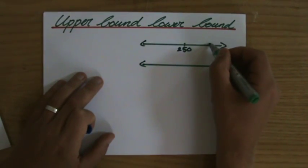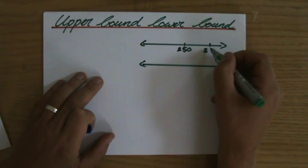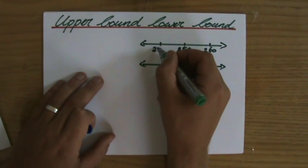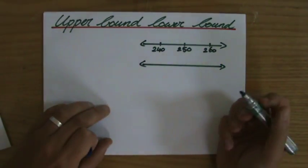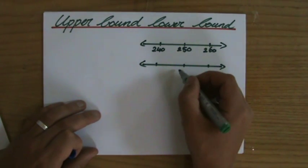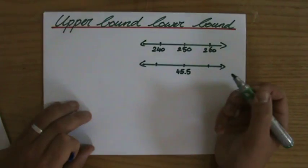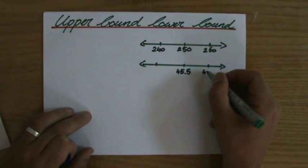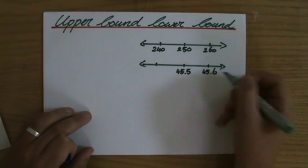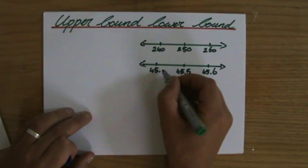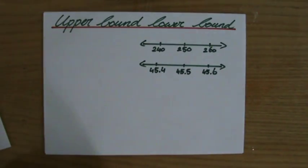The next value on that side is 260, and on the other side it's 240. Now let's look at those kilometers. 45.5, corrected to one decimal place. The next value is 45.6, and over here 45.4. Excellent.